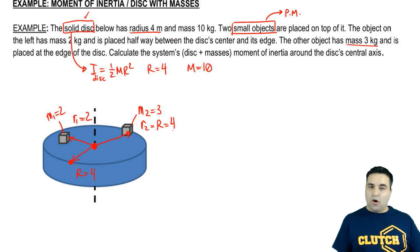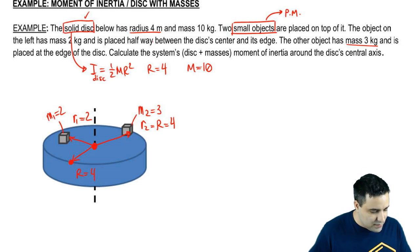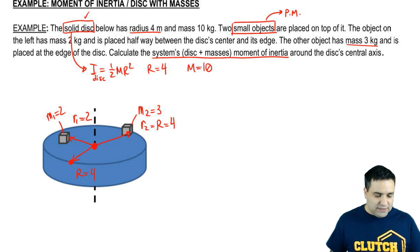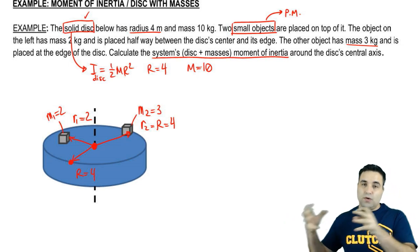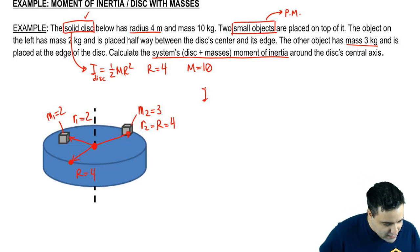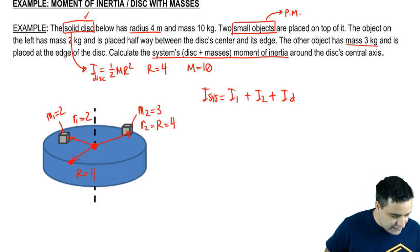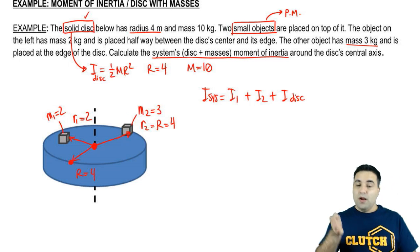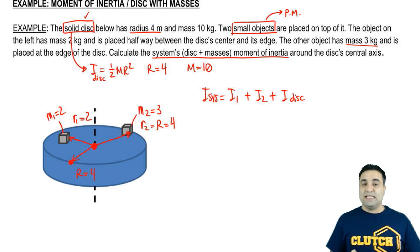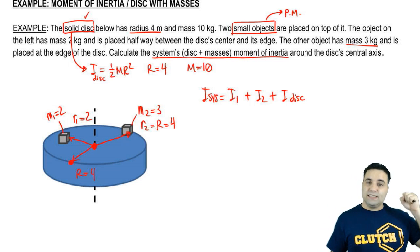So I'm giving you all the information you need to calculate the system's moments of inertia. Now, system is a combination of the disk with the masses. So I system is I1 plus I2, object 1, object 2, plus I disk. And remember, for every one of these, you have to determine, is this a point mass or is this a shape?